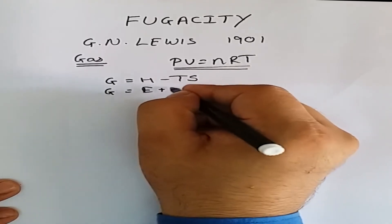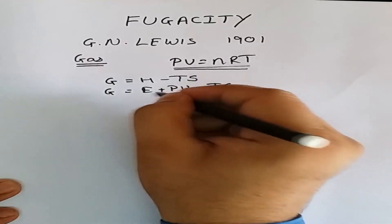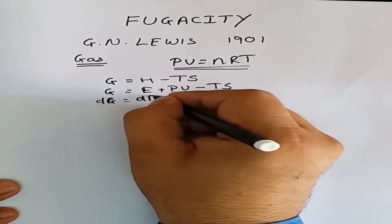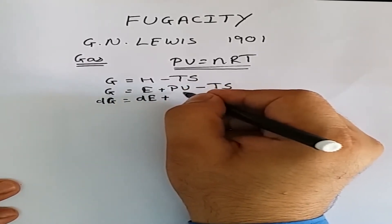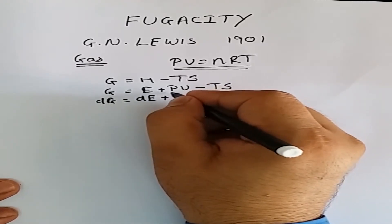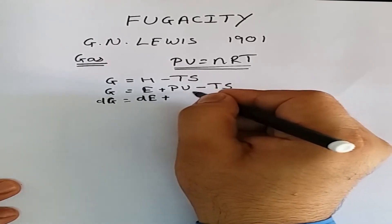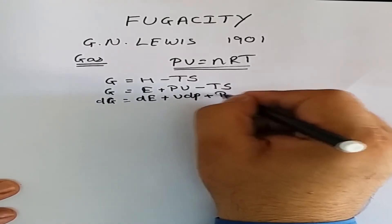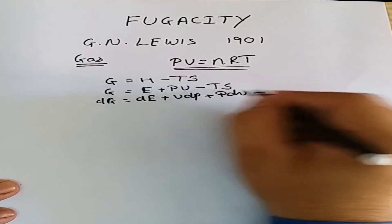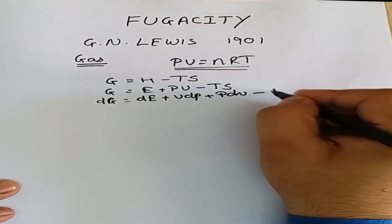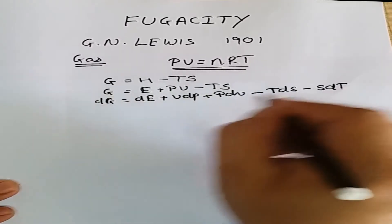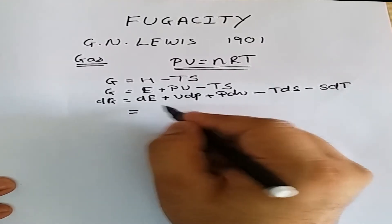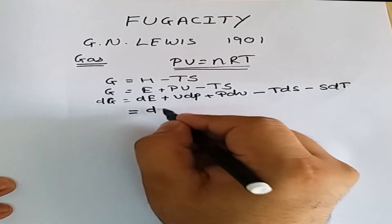We can write G = E + PV - TS. If we differentiate this equation, we get dG = dE + VdP + PdV - TdS - SdT, where we differentiate PV and TS by parts, keeping one term constant while differentiating the other.